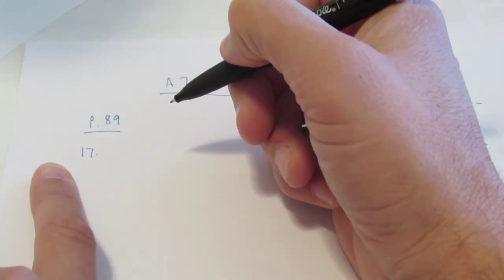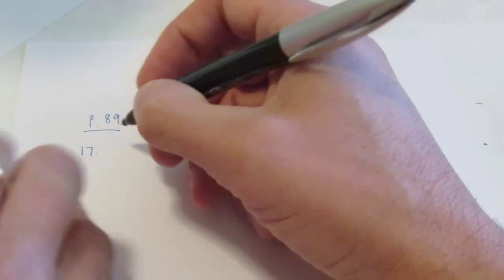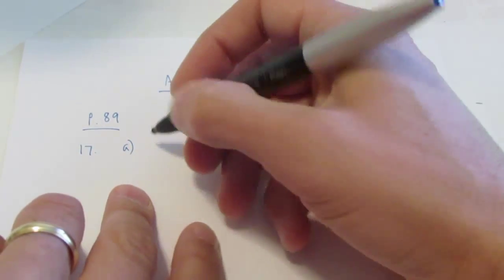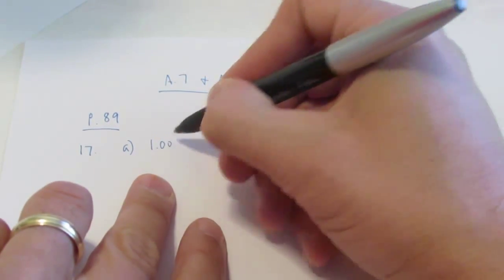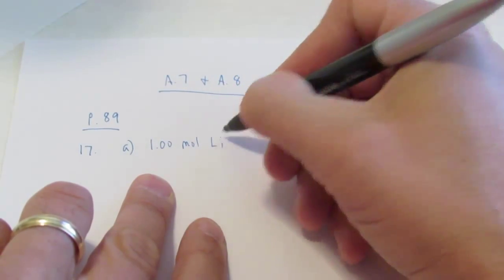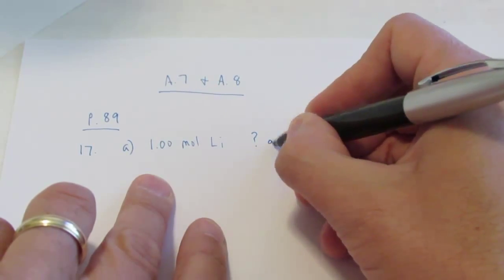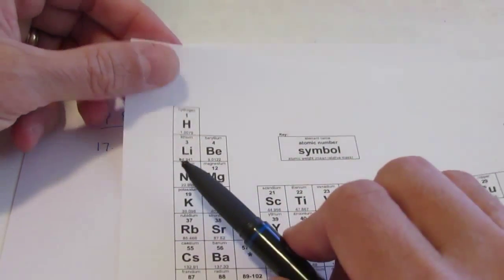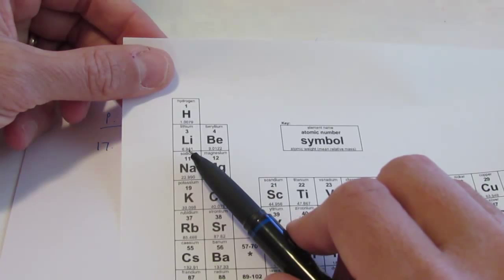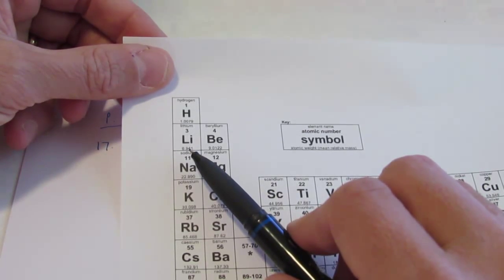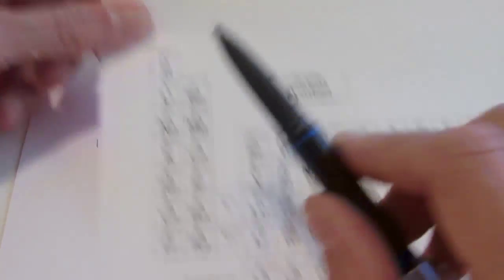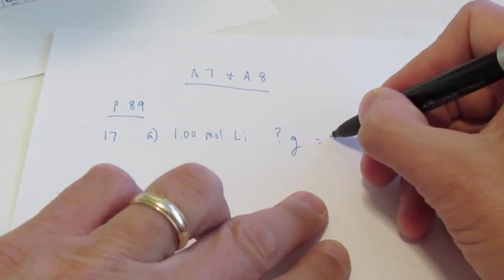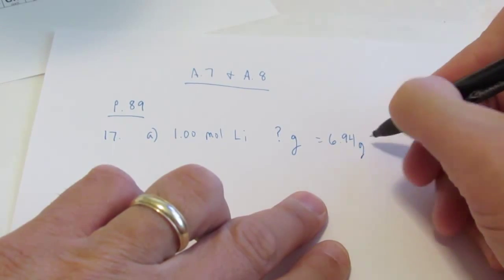We're going to start with number 17 where it says, 'What is the mass in grams of each of the following?' Letter A is pretty straightforward — it says what is the mass in grams of 1.00 moles of lithium? If we take a look at the atomic mass of an element in grams, that is the mass of 1 mole of that element's atoms. For lithium it says 6.941, but we're only allowed 3 significant figures, so we're going with 6.94 grams of lithium.